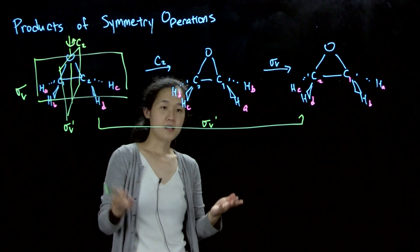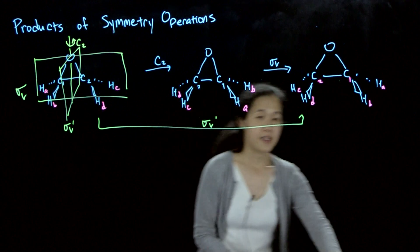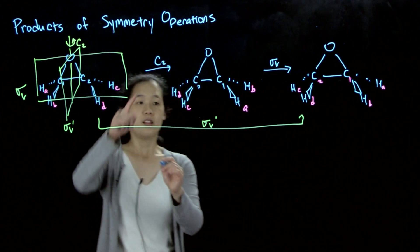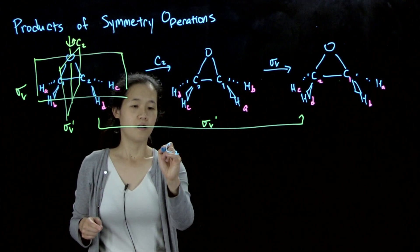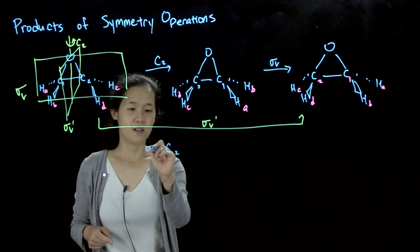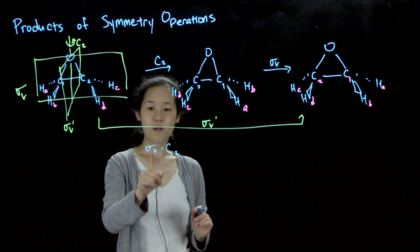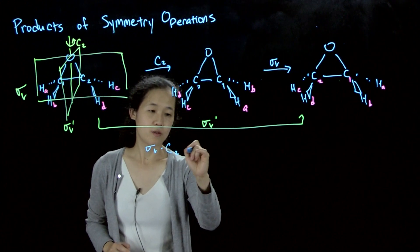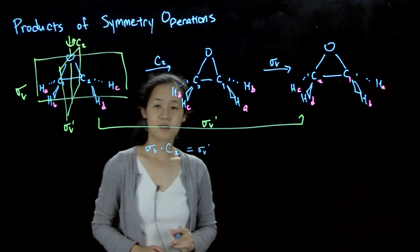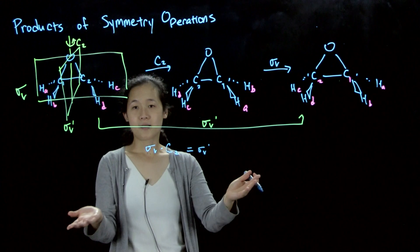So we could denote this as saying that C2 followed by a sigma v. By convention, you read right to left, meaning that C2 first, followed by a sigma v, and this equals sigma v prime. And so these are products of symmetry operations.